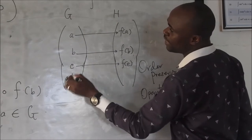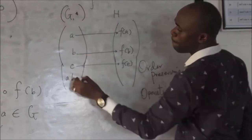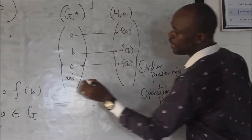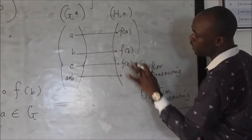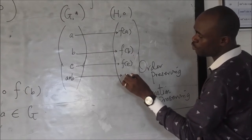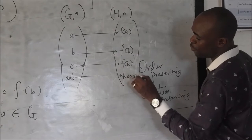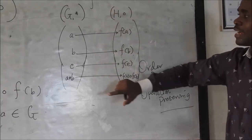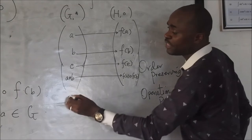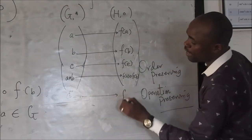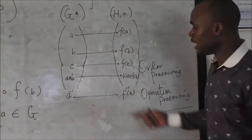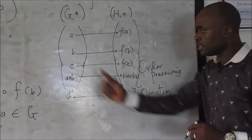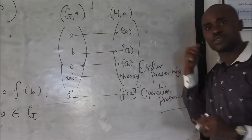It also maps A and B: if A star B is with respect to this operation star, it is going to map this to F of A circle F of B. So it is very good that you note all of this. It essentially maps the inverse of A as well: if this is A inverse, it is going to map this to F of A inverse, which is F of A all inverse. So it is operation-preserving and it is order-preserving.